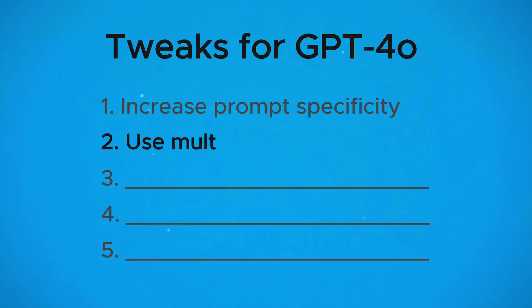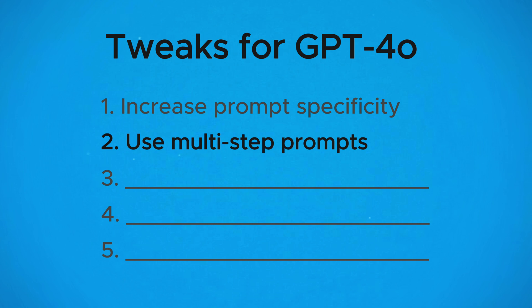This improved instruction following leads us to our second tweak: use multi-step prompts. With GPT-3.5 it just wasn't possible to do this most of the time — it would get confused and lose track of what you wanted to do, or only do part of what you asked.